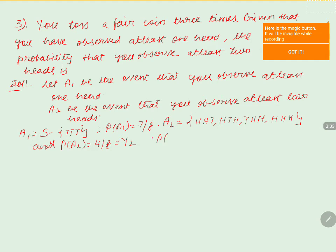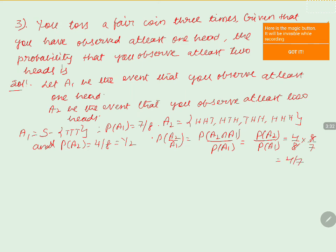Thus we can write P(A2 | A1) = P(A2 ∩ A1) / P(A1). Since A2 is a subset of A1, this equals P(A2) / P(A1) = (4/8) / (7/8). Taking the reciprocal, the 8s cancel, giving us the required probability of 4/7.